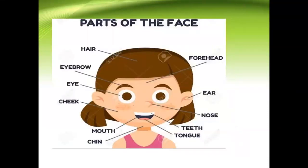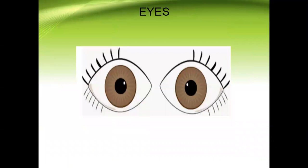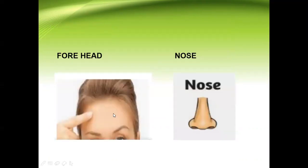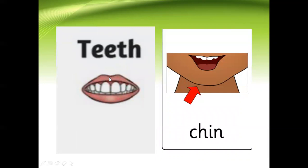Now here are the parts of the face. You can see all the different parts of the face. This is the head and this is your hair. These are your eyes — how many eyes do we have, children? Two eyes. This is the forehead and this is the nose. These are the lips — how many lips do we have? Two lips. And this is the tongue. This is the teeth.